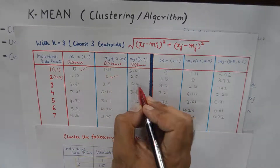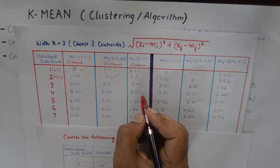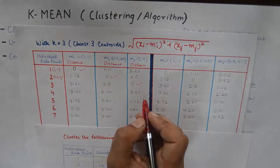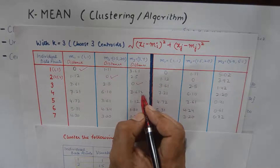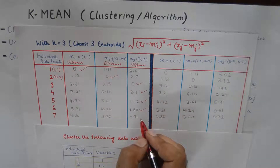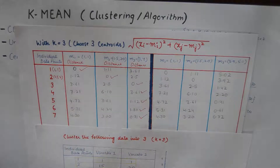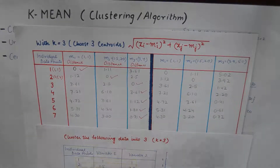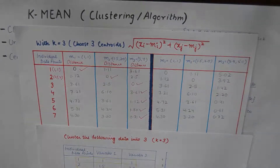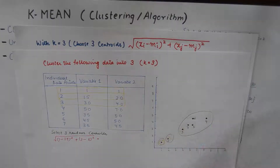Data point 3 goes to cluster 3. Data point 4 is closest to centroid 3, so it goes to cluster 3. Data point 5 also goes to cluster 3. Data point 6 is closer to centroid 3, so it also goes to cluster 3, and data point 7 as well. So after the first step, data point 1 stays in cluster 1, data point 2 stays in cluster 2, and the rest stay in cluster 3.